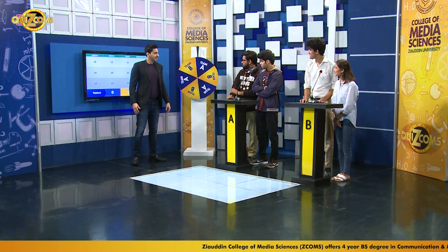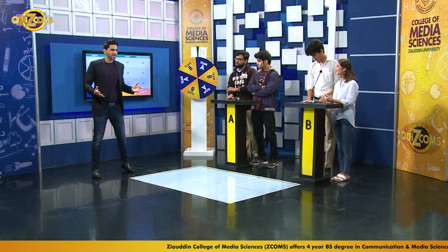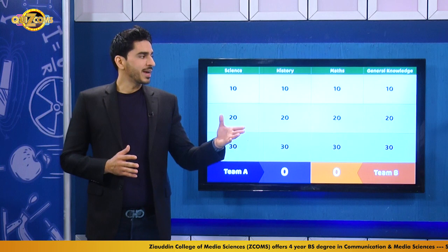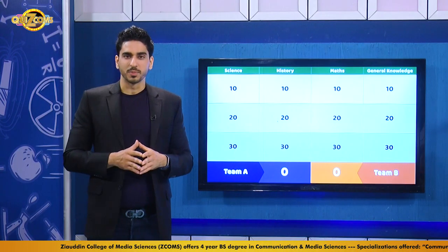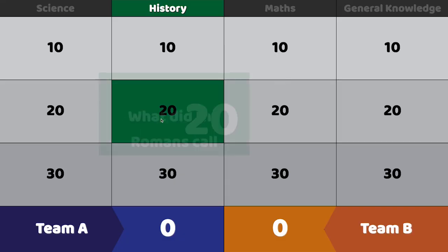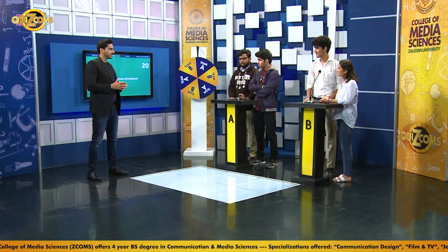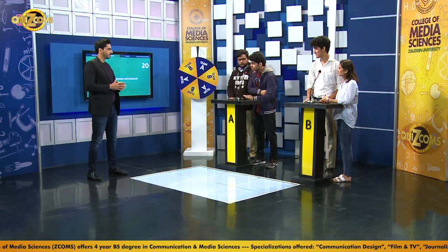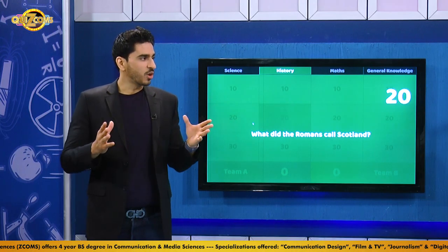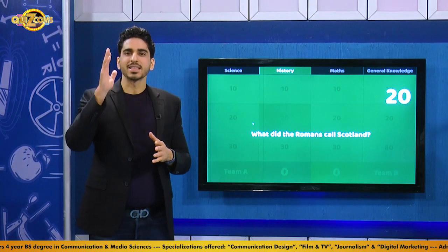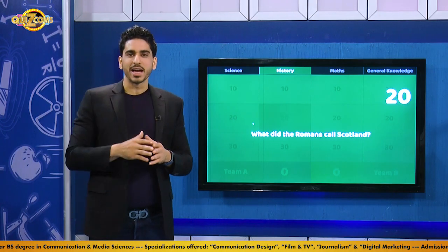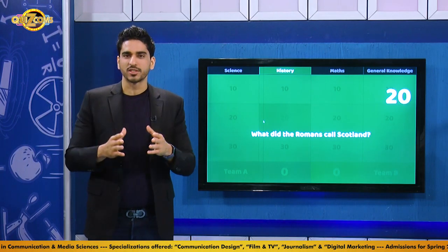The spinner lands on Team A, so they get to start. Team A chooses history for 20 points. The question: what did the Romans call Scotland? Team A buzzes — the answer is Caledonia. Caledonia is absolutely correct! Points to Team A. Good start.